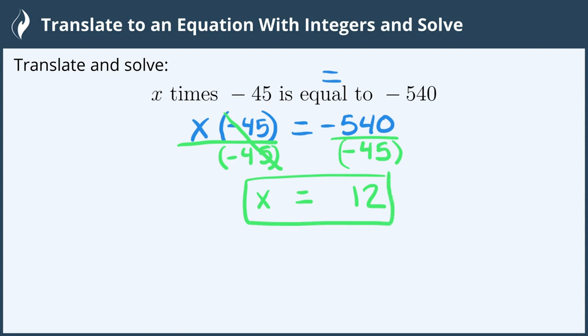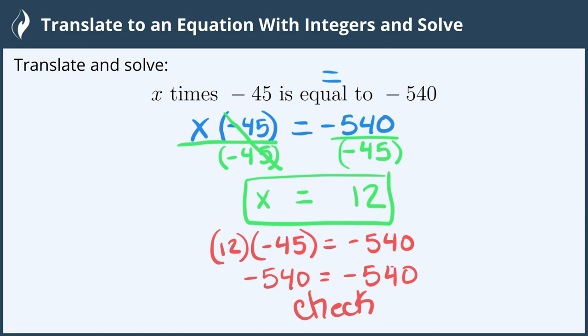We can also go back to the original and check by substituting 12 into the original equation. 12 times negative 45, and see if it equals negative 540. Using my calculator, 12 times negative 45 gives me negative 540 which does equal negative 540, so it checks. That tells me that my solution x equals 12 is a solution to the equation, and now we're all done.